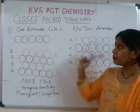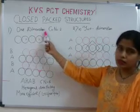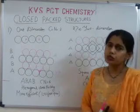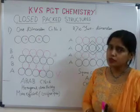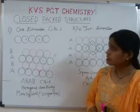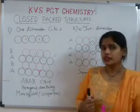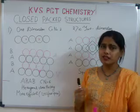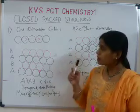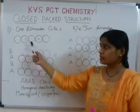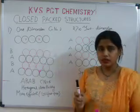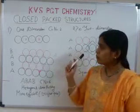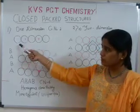First is one dimensional closed packing. There is only one mode of arrangement if we go for a one dimensional packing. Consider your constituent atom as a hard sphere. We need to arrange these constituent atoms in one dimension, and there is only one possible way — like this.